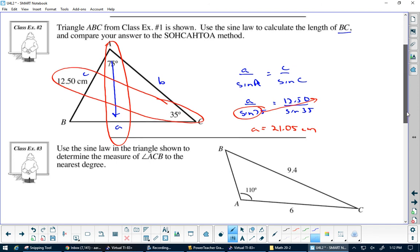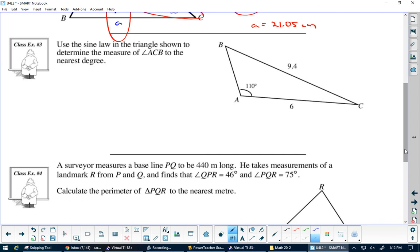Next one, let's look at this one. This says use the sine law in the triangle and determine angle ACB. This is the one they want, ACB. Let's see, we have loops here. Here's one loop. Now I can't do a loop here because there would be two unknowns.